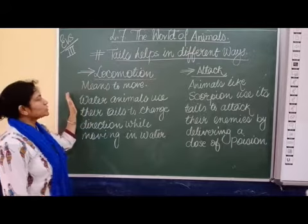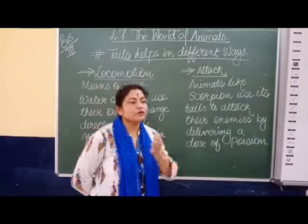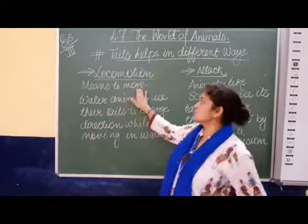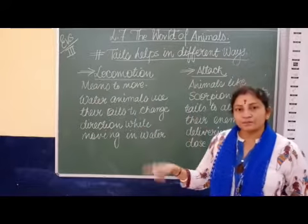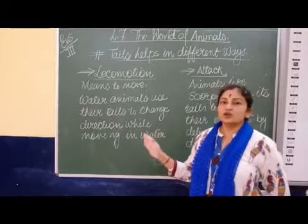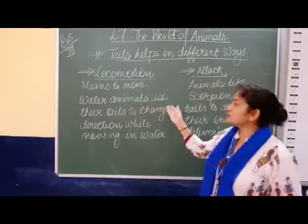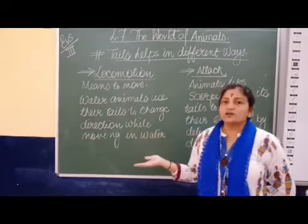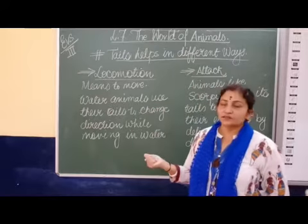Now, if we talk about locomotion — locomotion means to move from one place to another. But how does the tail help an animal move from one place to another? Animals that live in water, like fish, use their tail to change direction while moving in water. So the fish uses its tail to change direction while swimming.